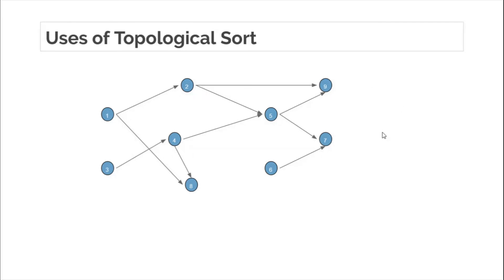Let's take an example and see how topological sort is used. Suppose you have this dependency graph for project management. I want to start a Django project — Django is a Python framework used to build web applications. But before starting the Django project you need to have the Django framework installed, before that you must have Python libraries installed, and before that you must have at least a PC or laptop to work on. This is a dependency graph.